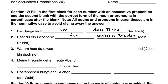Nummer drei: 'Warum hast du etwas blank blank? Ich bin doch nett.' — Why do you have something against me? I am nice. We have gegen for 'against,' and then ich in the accusative case becomes mich. Warum hast du etwas gegen mich? Why do you have something against me? Ich bin doch nett — I'm nice.